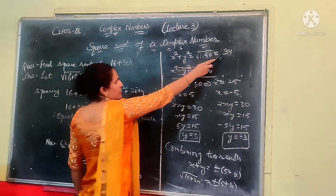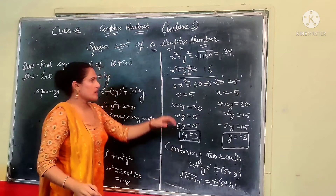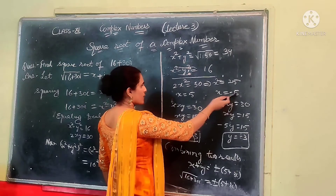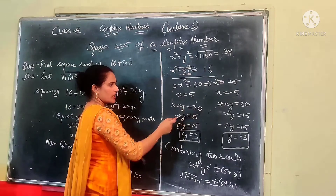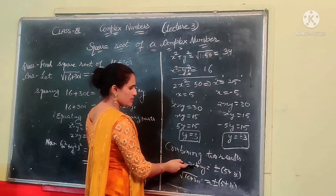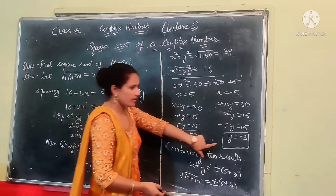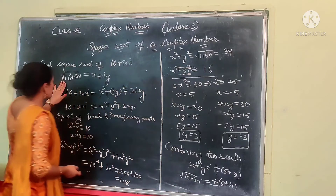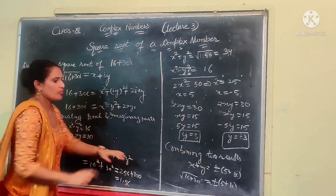Now, x squared plus y squared equals 34 and x squared minus y squared equals 16. Solving these two equations, we get x equals plus or minus 5. Putting the value of x into the equation 2xy equals 30, we find y equals plus or minus 3. So x equals plus or minus 5 and y equals plus or minus 3.